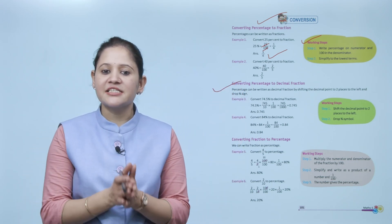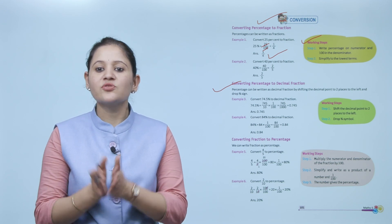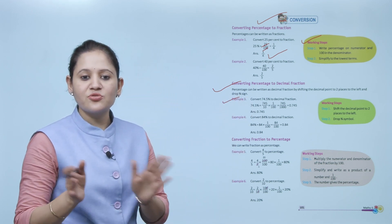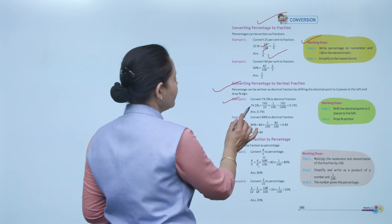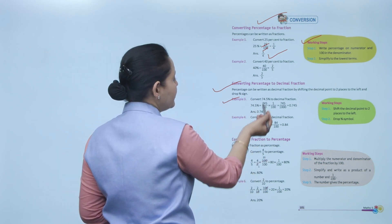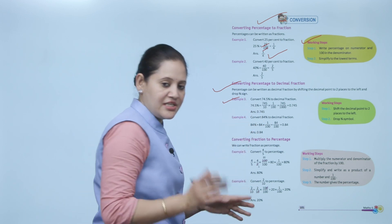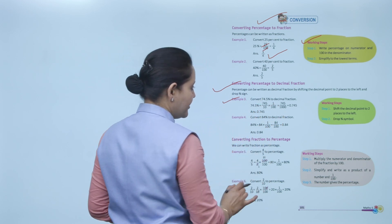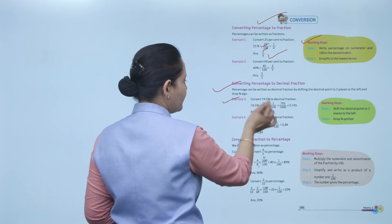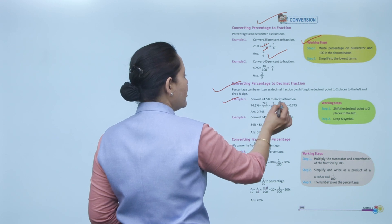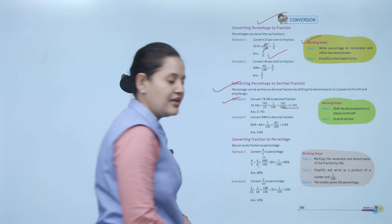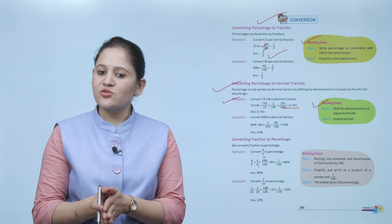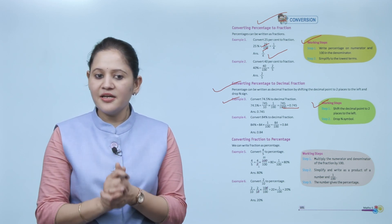Converting percentage to decimal fraction: a percentage can be written as a decimal fraction by shifting the decimal point two places to the left and dropping the percentage sign. For example, convert 74.5% to a decimal fraction. Remove the decimal: write 745 upon 10, then multiply by 1/100, giving 745 upon 1000, which equals 0.745. Working step: shift the decimal point two places to the left and drop the percentage sign.